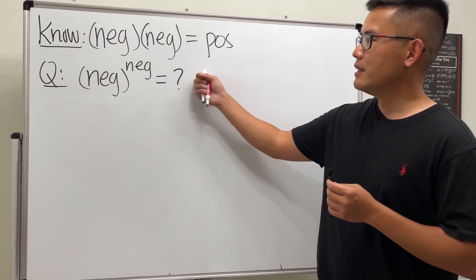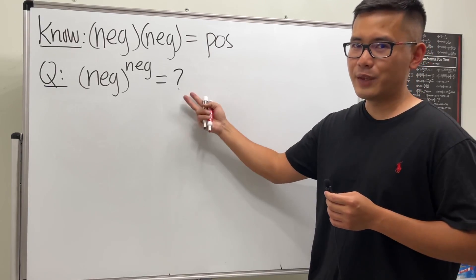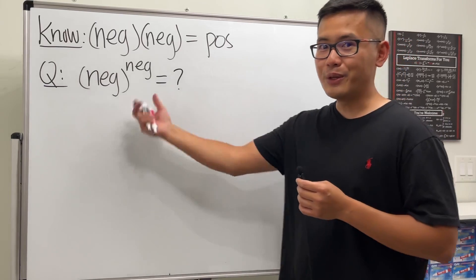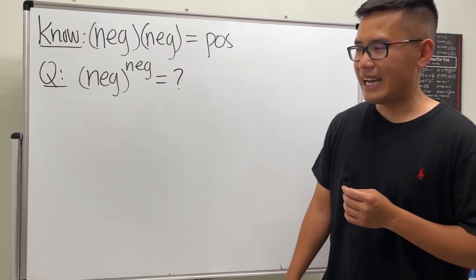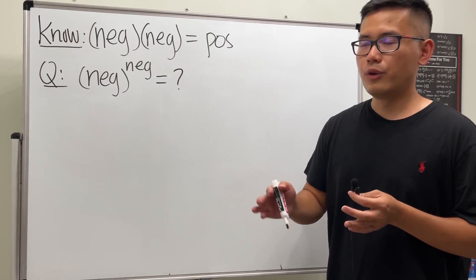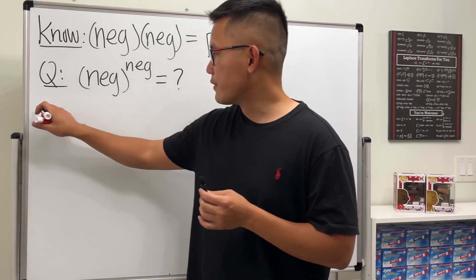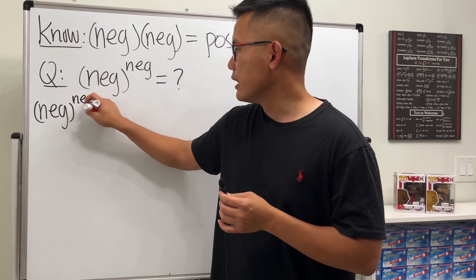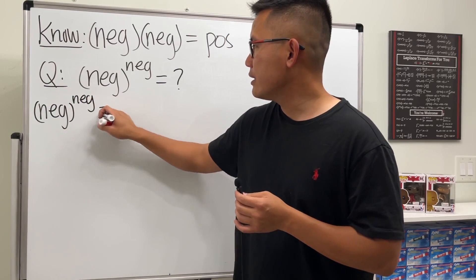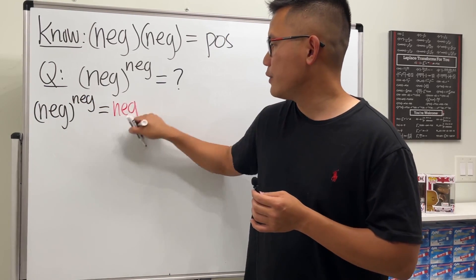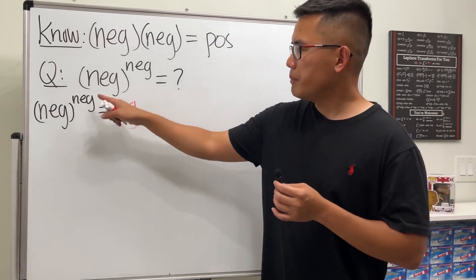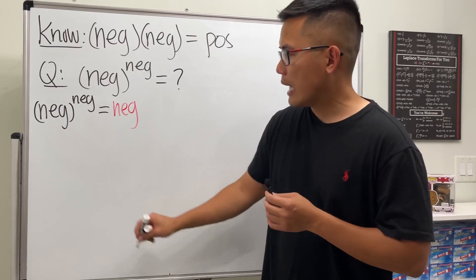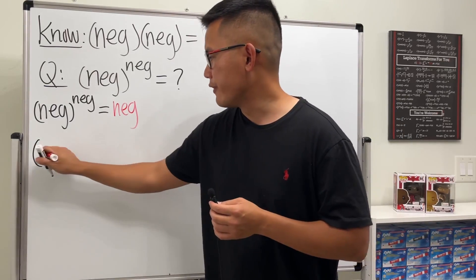The first possibility is the result can be negative, the second is it can be positive, and the third is the result can be imaginary. I'm going to give you an example for each one. For the first example, a negative number raised to a negative number where we end up with a negative result — you can pick different numbers or the same number.